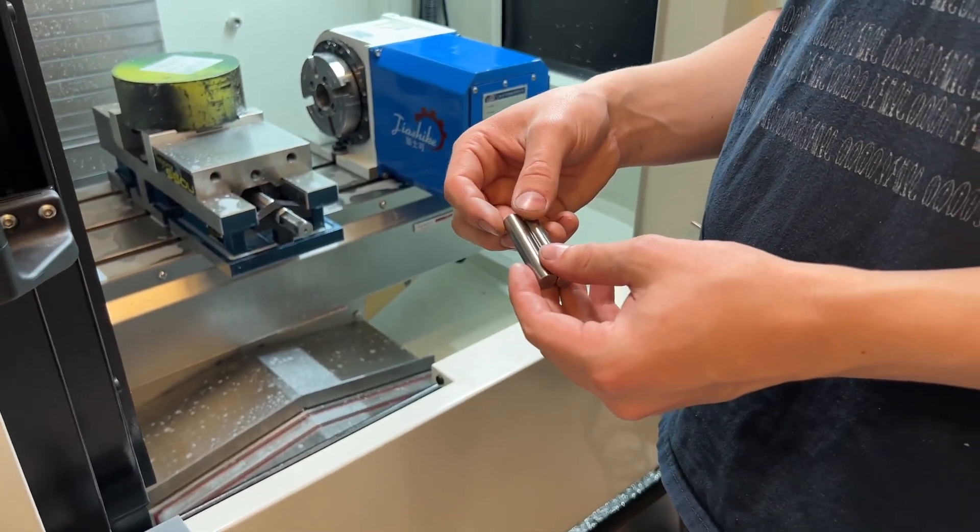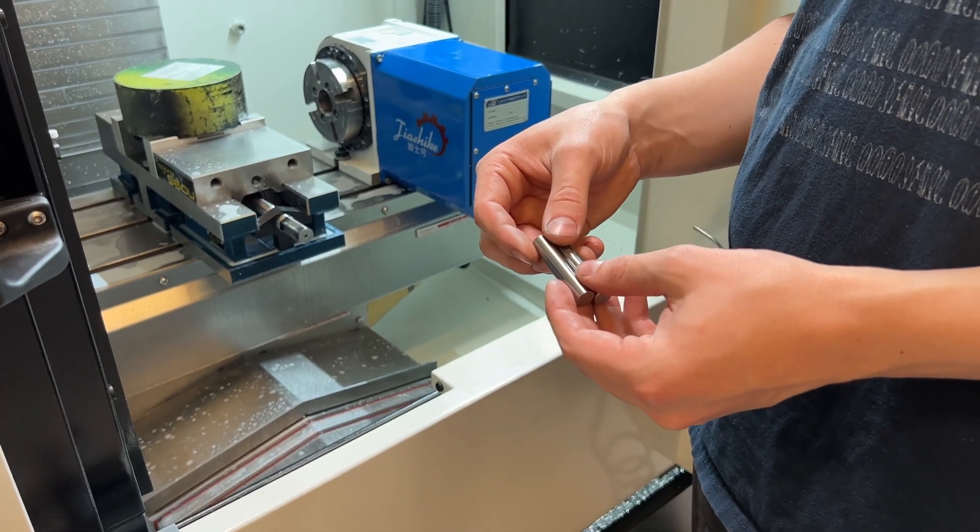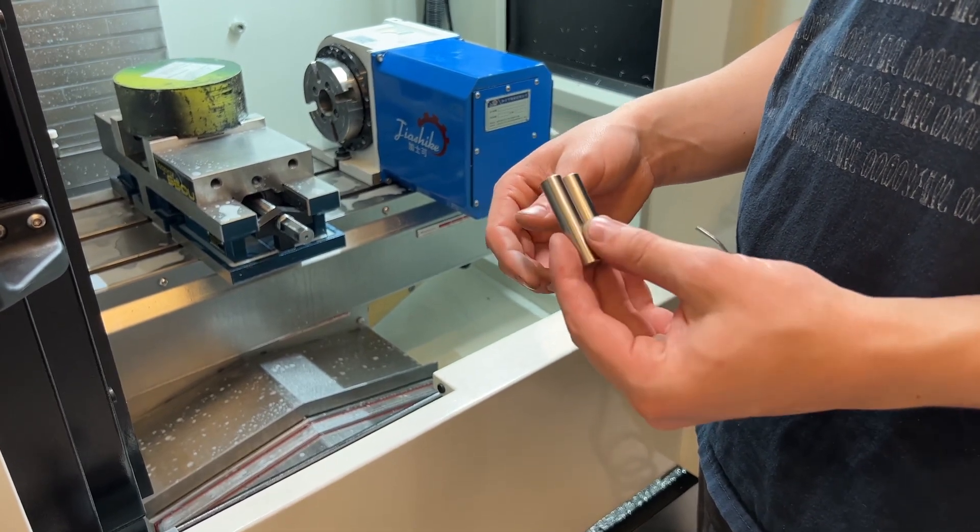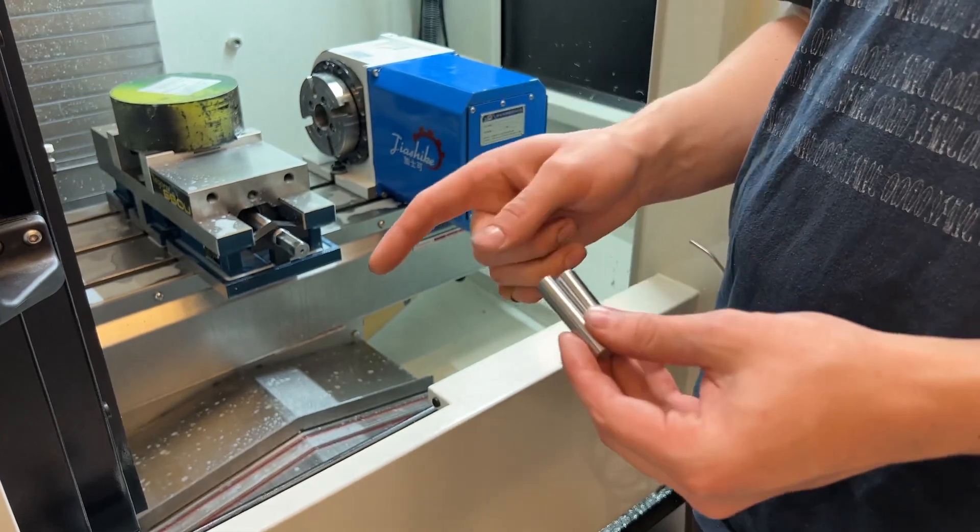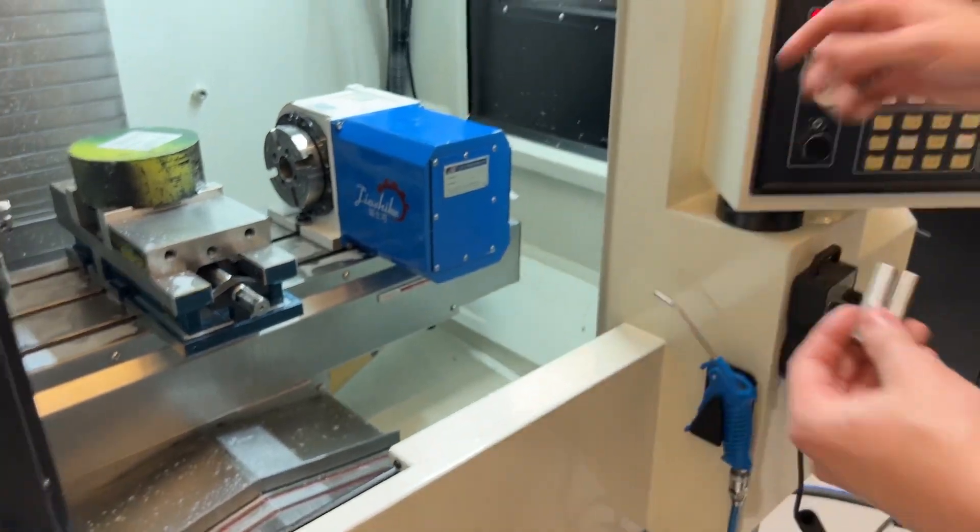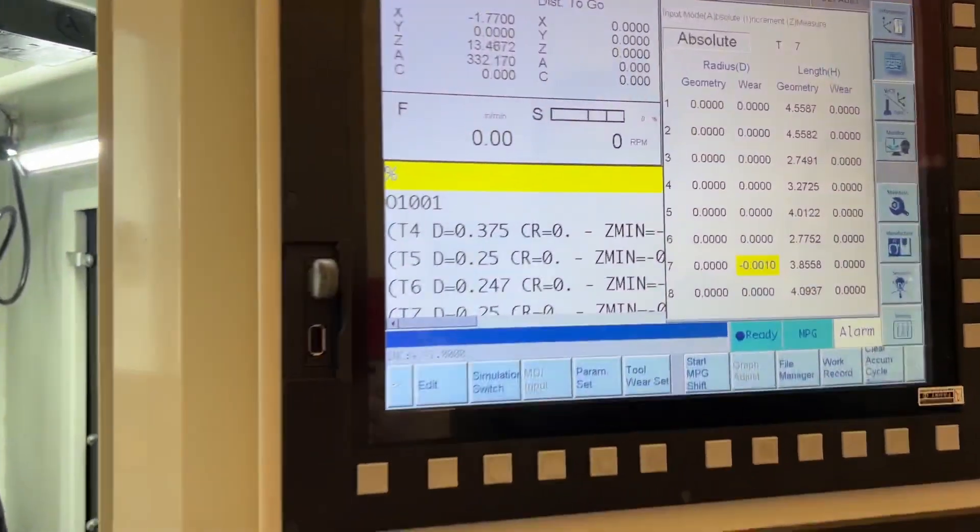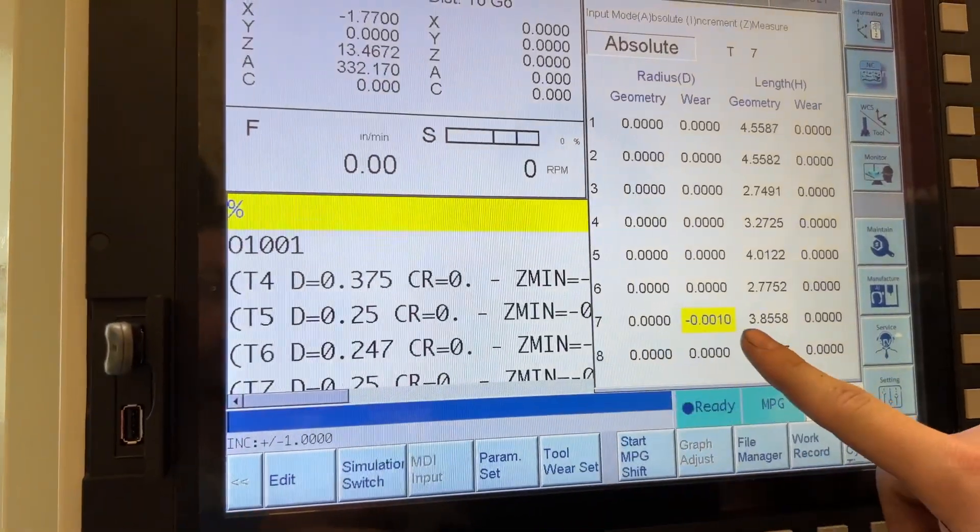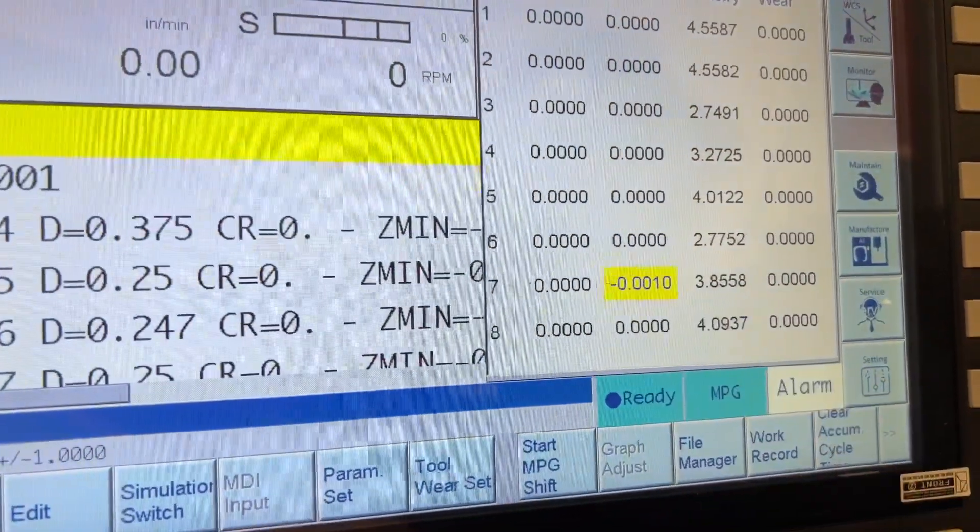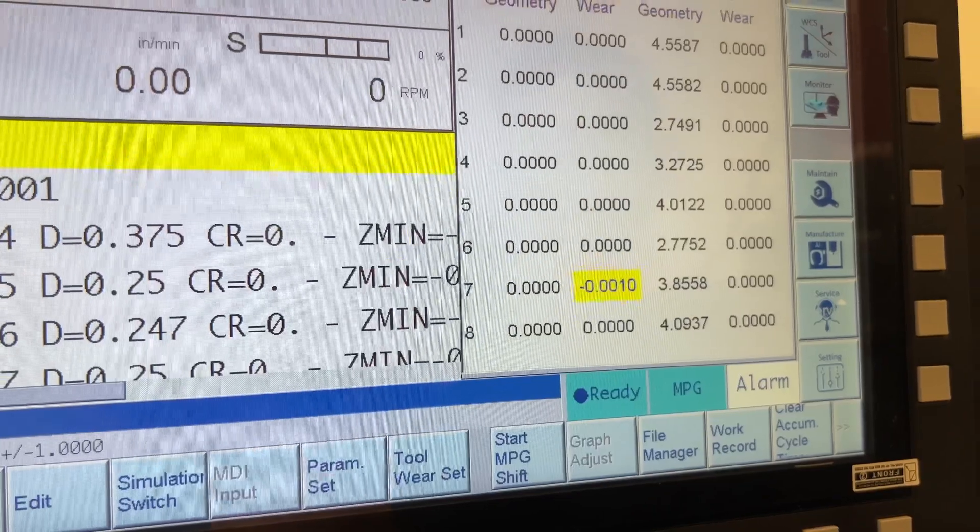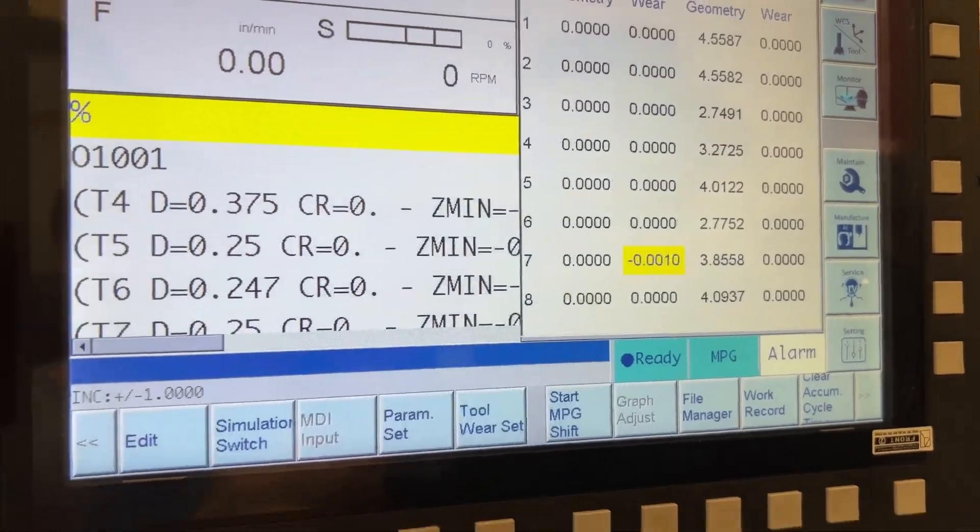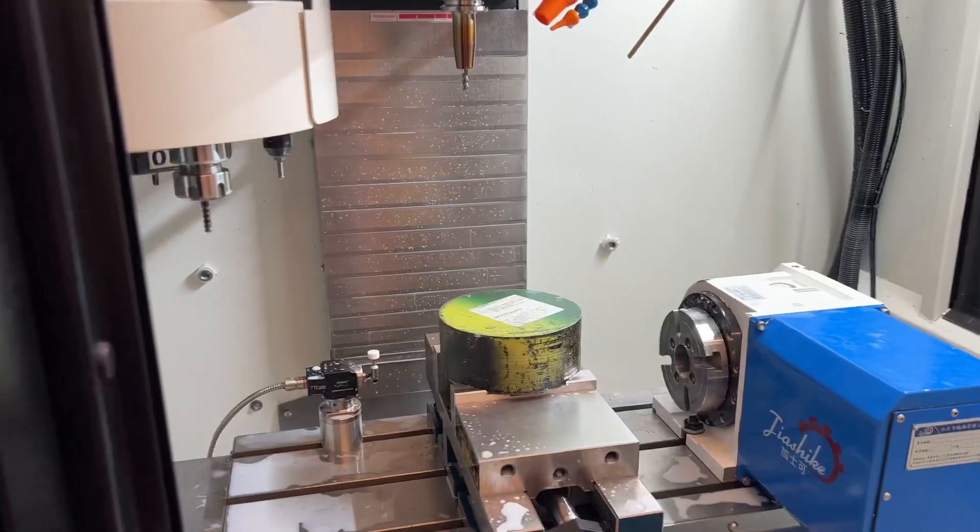So once you measure your accurate size on your pre-finished cut, I can then take the difference of what I should have and what I actually have and come over here to tool wear set. And I can put in for my tool seven, I can put in my wear for the radius. And then when you take your final pass, I should be right on size.